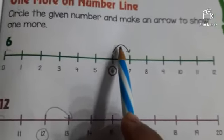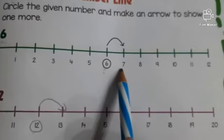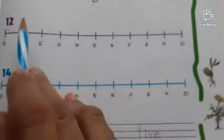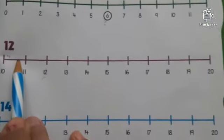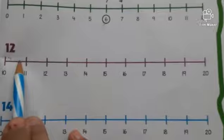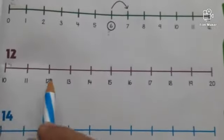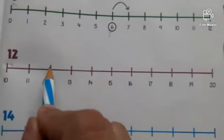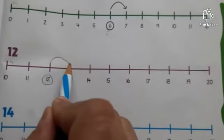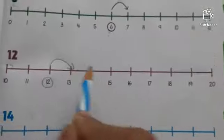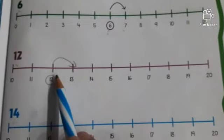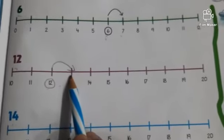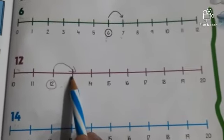Children, tell me, arrow shows which number? Yes, you are right. Arrow shows 7 number. Now, see, which number is written here? It is number 12. Now, encircle the number 12. And one more, you will show through an arrow like this. Fine. Now, tell me, if you jump one more, where will you jump? Yes, you are right. It is number 13.